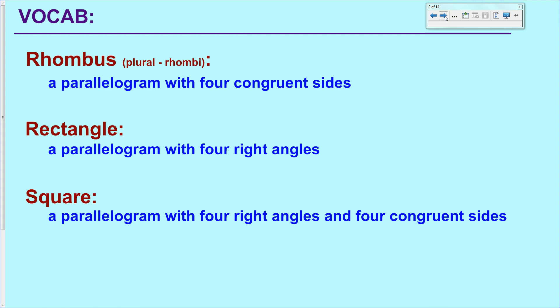Rhombus: a parallelogram with four congruent sides, so all four sides are equal in length. A rectangle is a parallelogram with four right angles, and then a square is a parallelogram with both those conditions, having four right angles and four congruent sides.